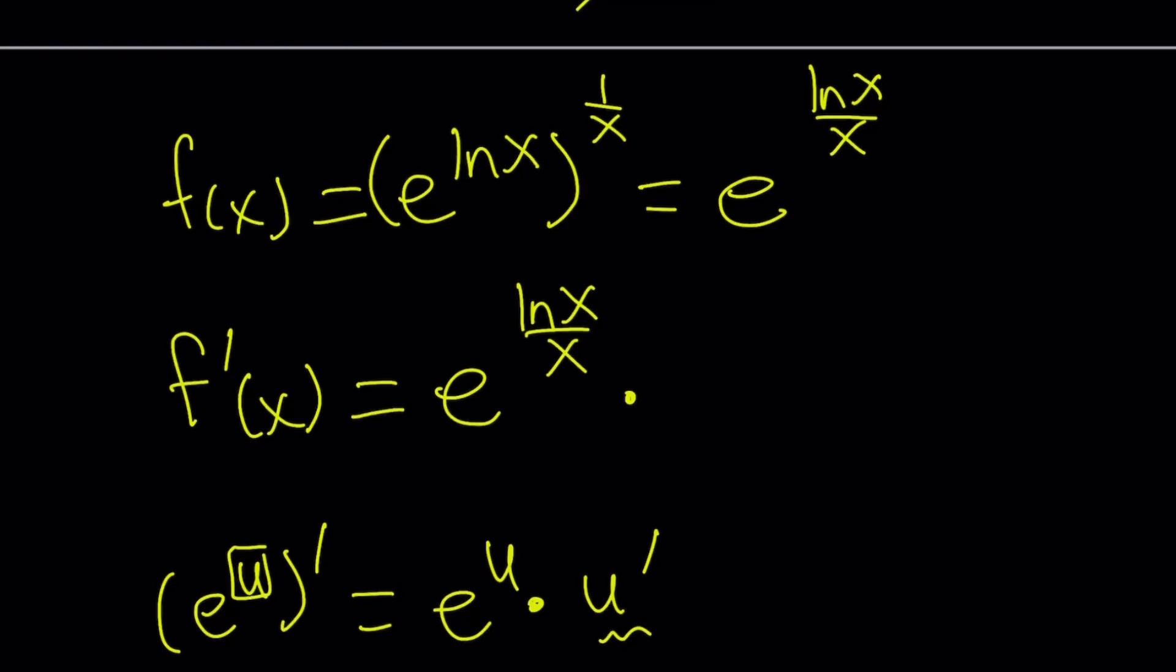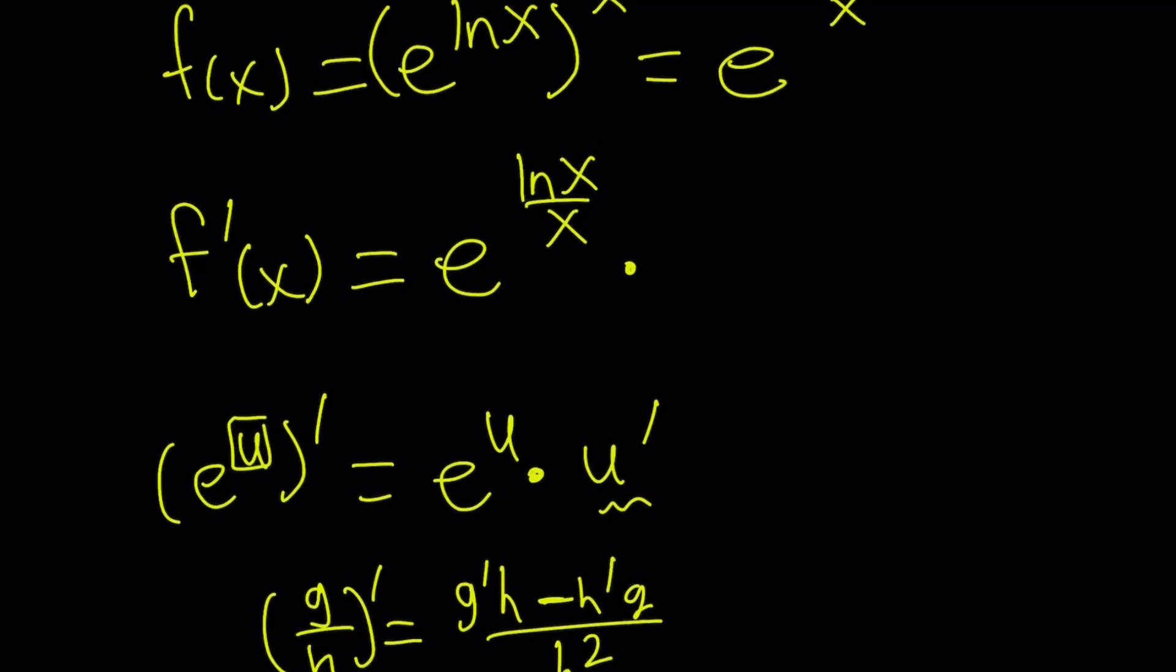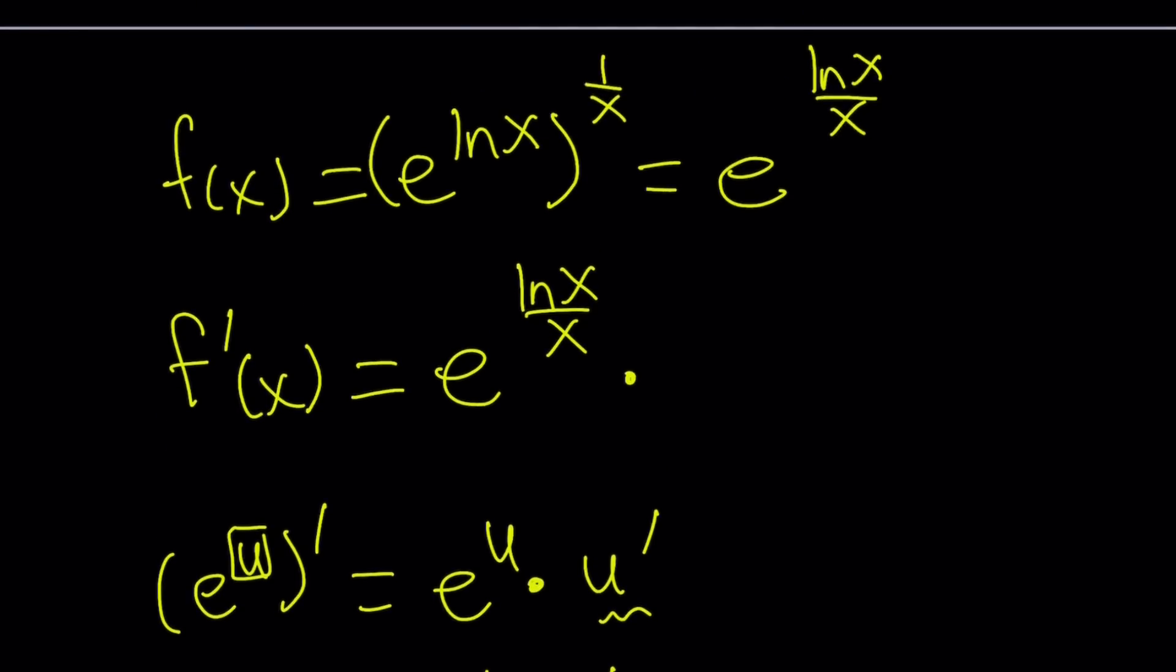Now, we're going to multiply this by the derivative of ln x over x, but that is a quotient, and we have something called a quotient rule. What is the rule for g over h? If you're differentiating the quotient of two functions, g prime h minus h prime g divided by h squared. Easy, right? You just differentiate one, multiply by the other, and do it again. Subtract and divide by the square of the denominator.